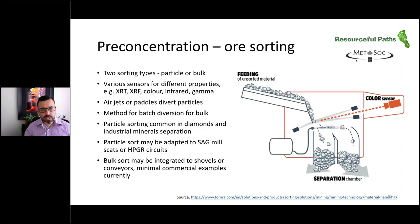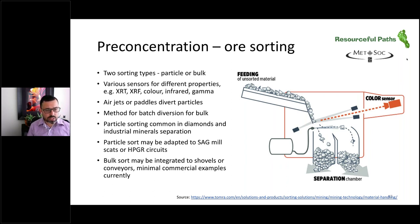Here's an example of ore sorting, one of the pre-concentration techniques. There are two types: particle sorting or bulk sorting. Various sensors can be used, such as X-ray transmittance, X-ray fluorescence, colour, etc. In particle sorting, we can use air jets or paddles to divert particles either into a waste stream or a valuable stream — commonly used in diamonds and industrial mineral separation. In bulk sorting, we use a batch diversion of a parcel of material into either a waste or a stockpile material. That can be done using shovels such as the ShovelSense technology or through diverting material on conveyors. There are minimal commercial examples of bulk sorting at this stage, whereas particle sorting is more widely used.